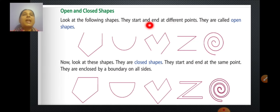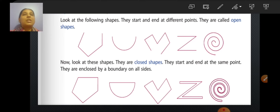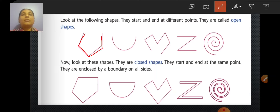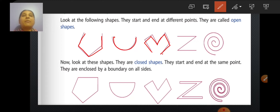These shapes start and end at different points. You can see, for example, the first shape is starting from here and then ending at some other point. Similarly, this curved shape is also starting from here and ending at some other point. The third one also starts somewhere and ends somewhere else. Similarly, this shape starts here and ends at a different point. So these are open shapes.